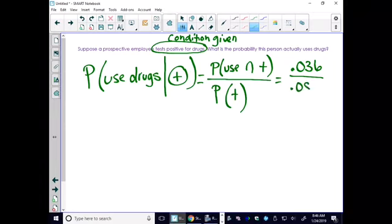The given, the known, the true statement here was that they did test positive. So we take 0.036 and divide that by 0.084.